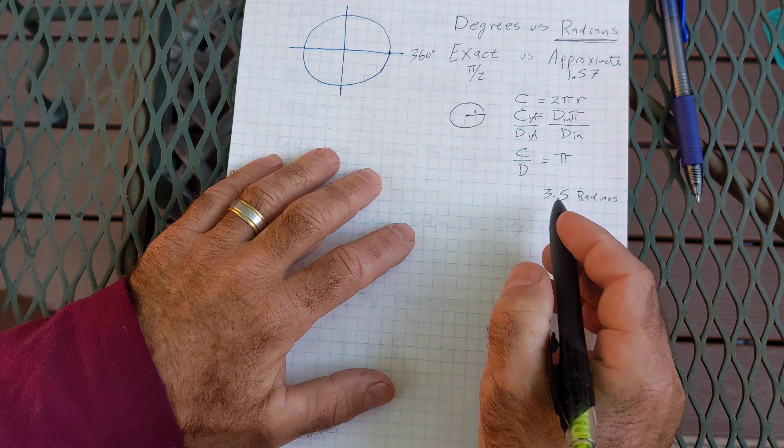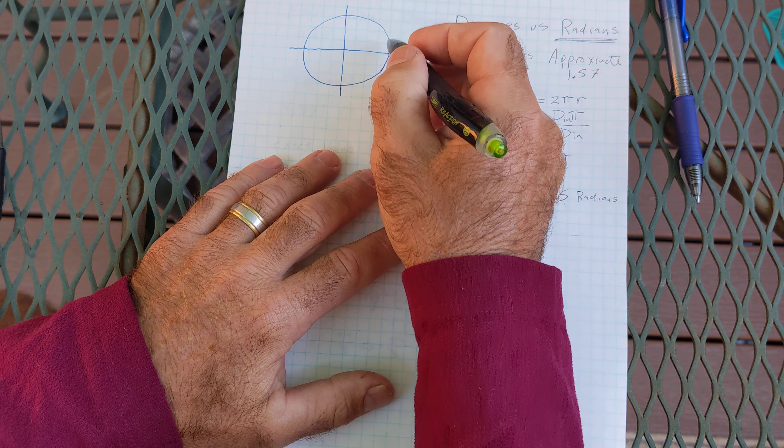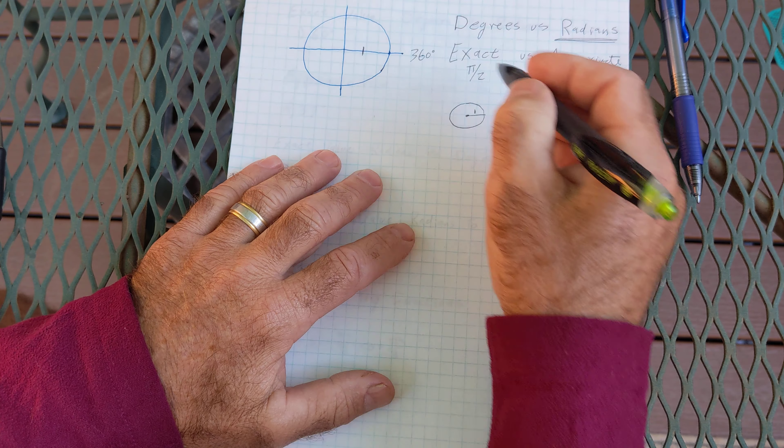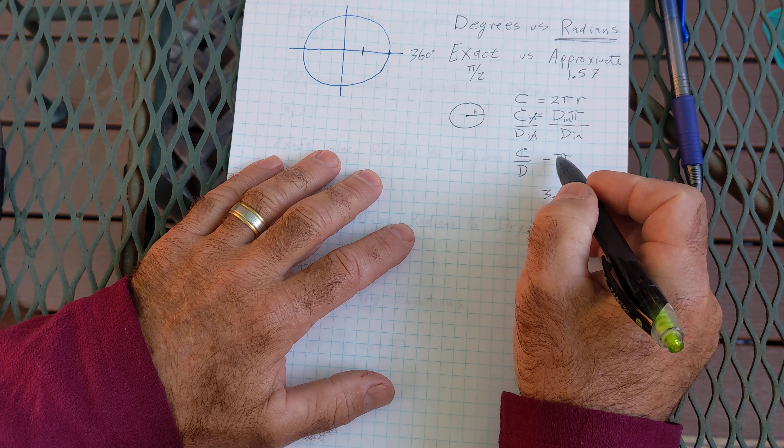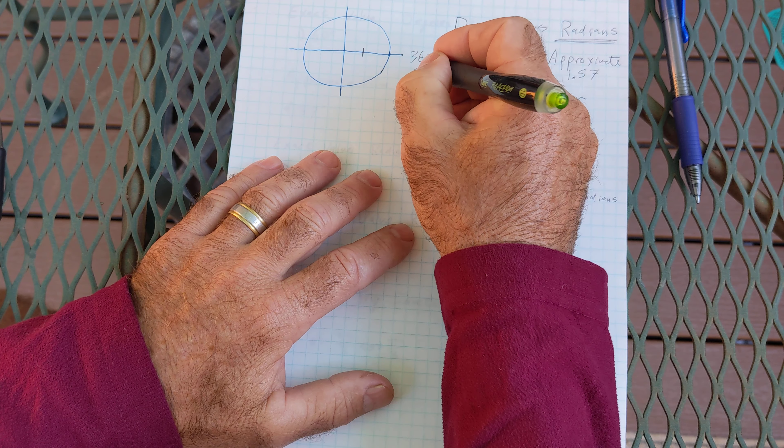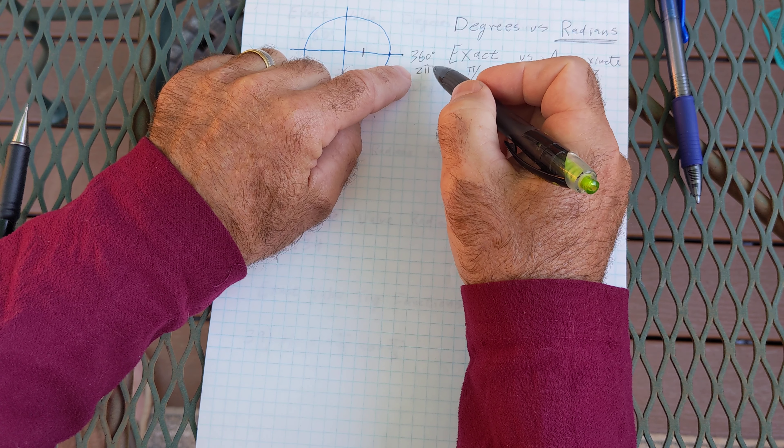So if all the way around the unit circle in degrees is 360 degrees, if my unit circle has a radius of 1 all the way around the circle in radians would be 2 pi r where r is 1 or 2 pi. So they're equivalent however they're different units.